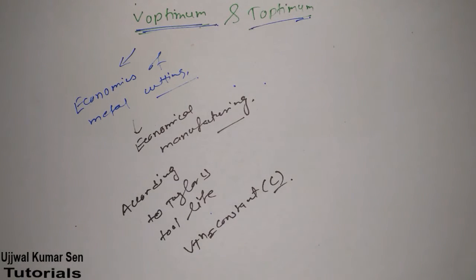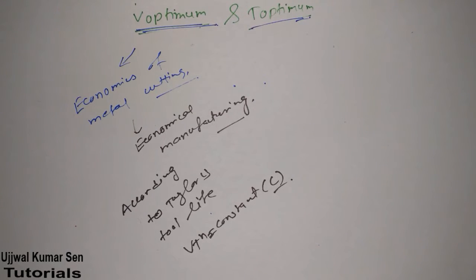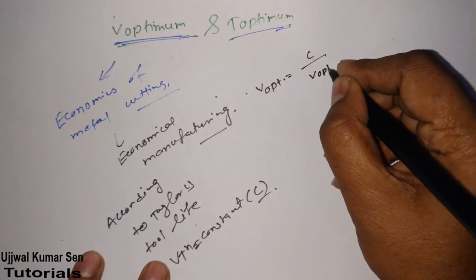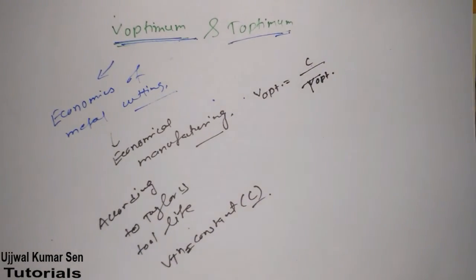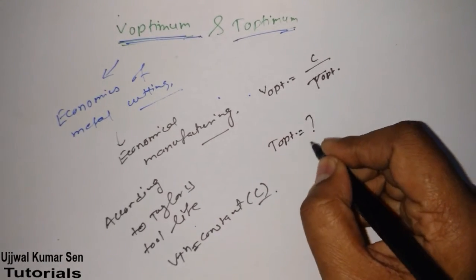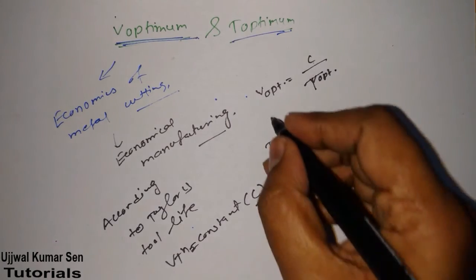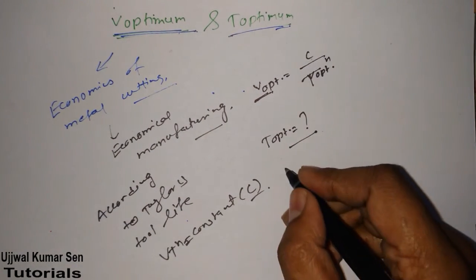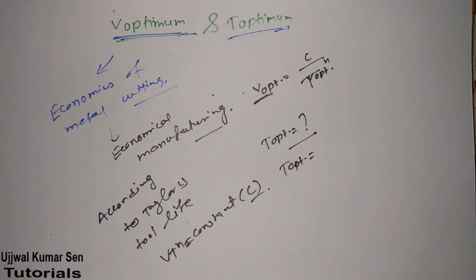If you are preparing this topic for numerical problems, this is the video you need to watch. We can write: V optimum = C / T optimum to the power n. So if we know T optimum, we can also find out V optimum. The most important thing is to first find out what is T optimum.